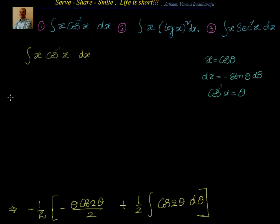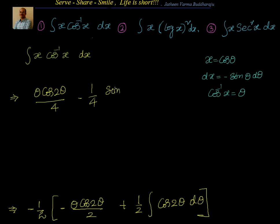Multiplying through by −½, the next step separates as: θ·cos 2θ / 4, minus (1/4) times the integral of cos 2θ, which is sin 2θ / 2. So we get θ·cos 2θ / 4 − (1/4)·(sin 2θ / 2) + C.